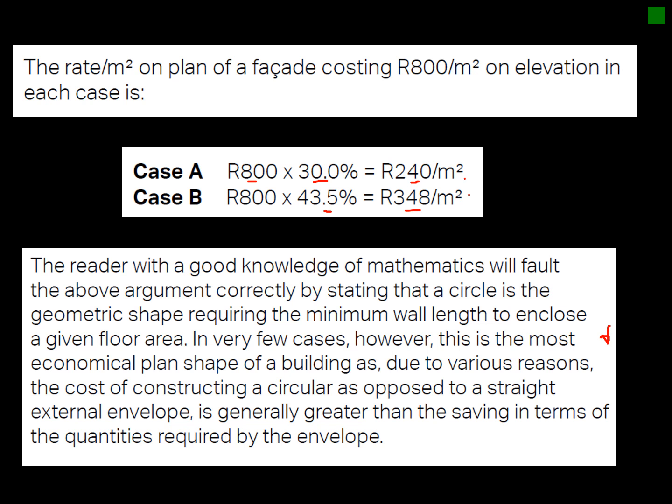The items an estimator typically considers are: what type of brick is used — is it a very expensive brick? Will it be plastered? Is it round? Is it a complex or unconventional shape? Will the contractor actually be able to execute it? Those are the things you consider when building up your rates and doing cost estimation.